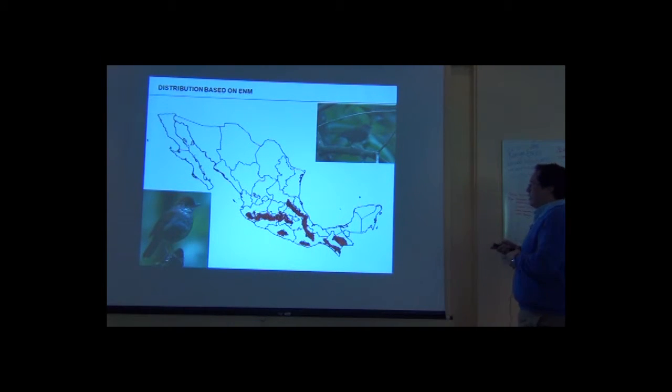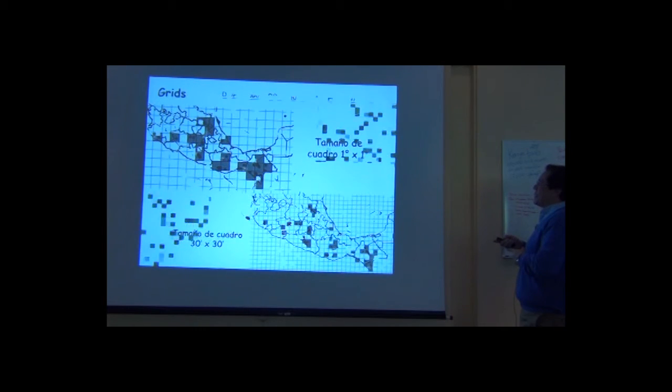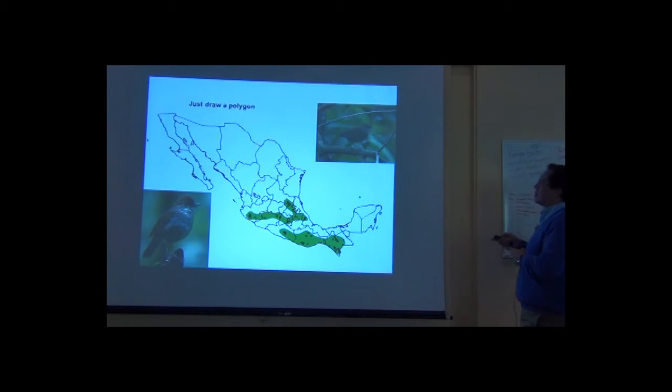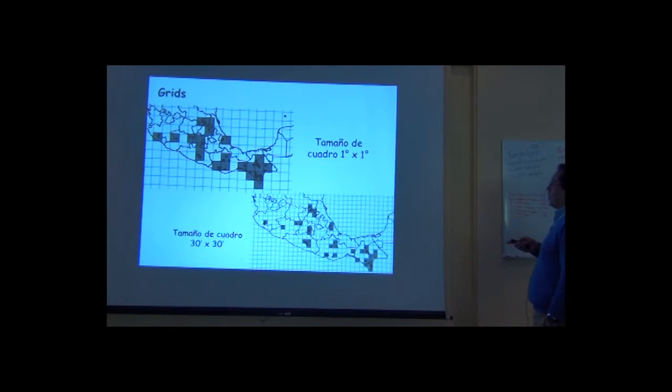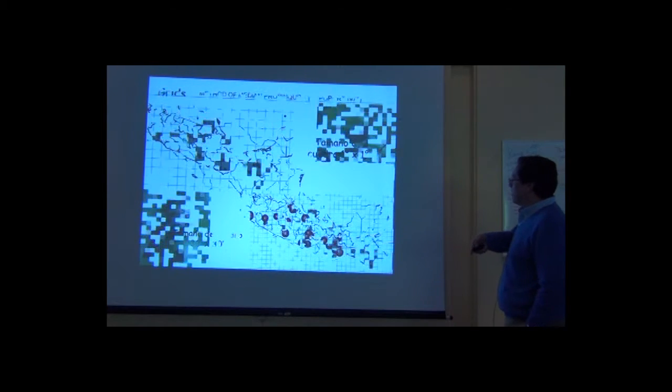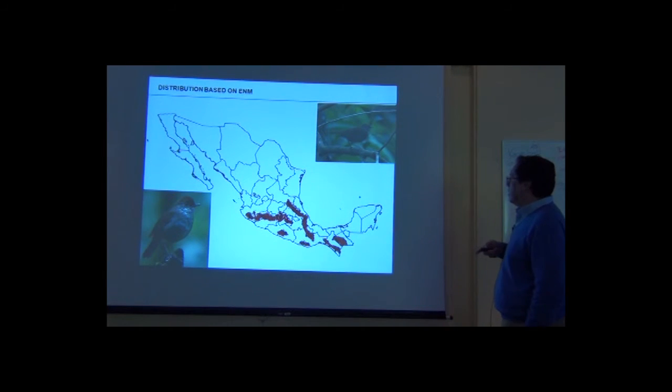The important thing here is that we have had several methods to reconstruct a hypothesis of the distributional areas of the species because we don't have the opportunity to know the real distribution of any species. We only do estimates of it. And here is the representation of the projected ecological conditions into the geography to generate a hypothesis of the distribution of the species.